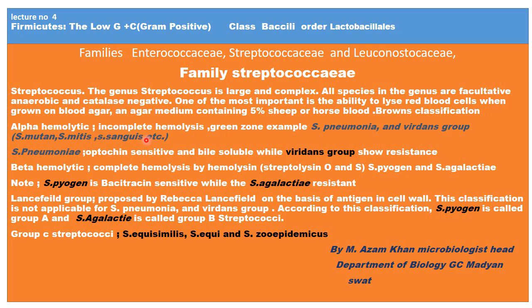How do you differentiate between the Viridans group and Streptococcus pneumoniae in the lab? Streptococcus pneumoniae is optochin sensitive and bile soluble — its colonies dissolve in bile. The Viridans group, however, is resistant to optochin and their colonies are not bile soluble. On this basis you can differentiate between these two, although both are alpha hemolytic.